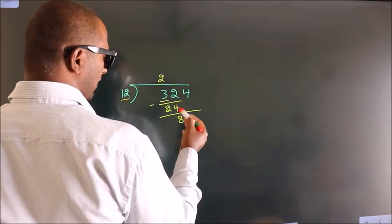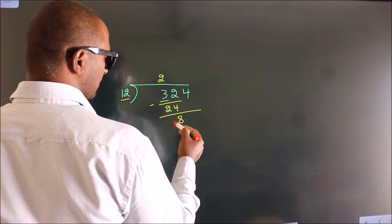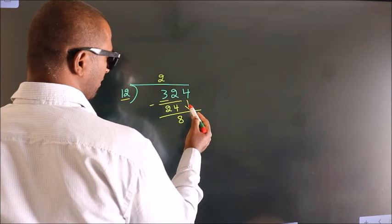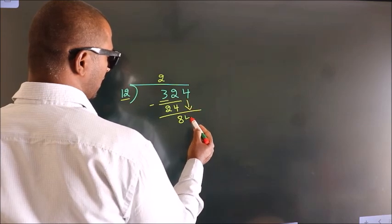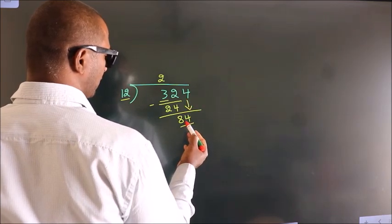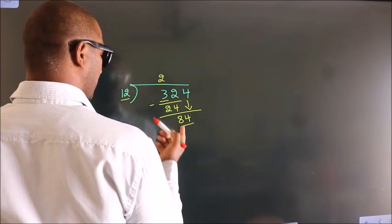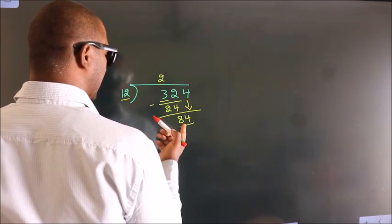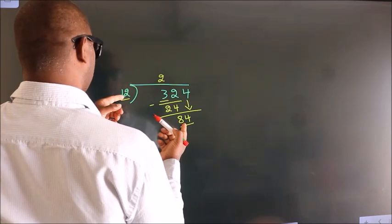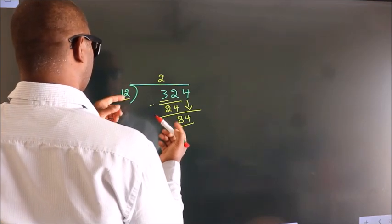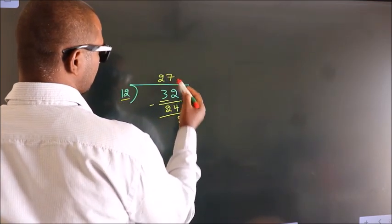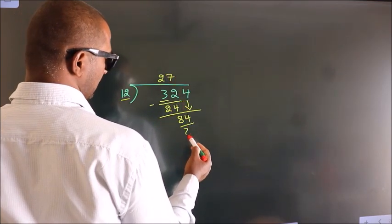After this, bring down the beside number. So 4 down. So 84. When do we get 84? In 12 table, 12 sevenths, 84.